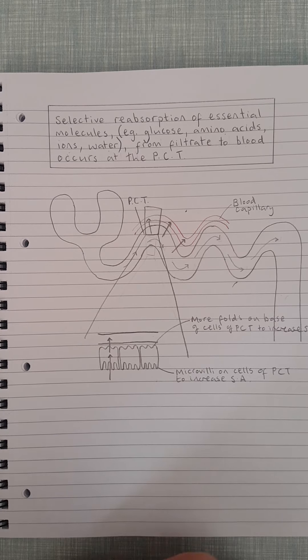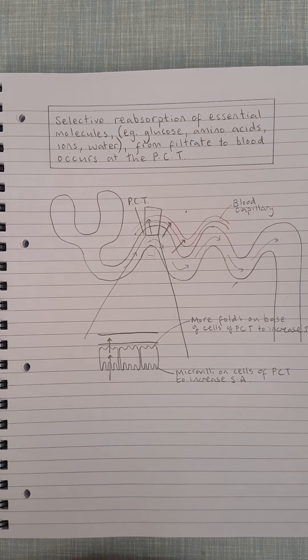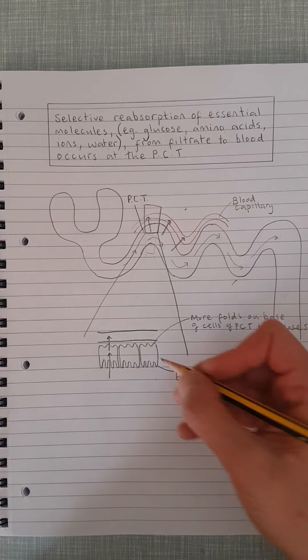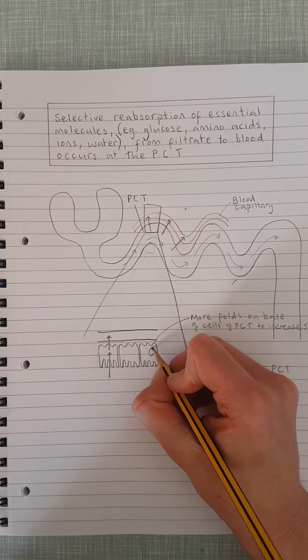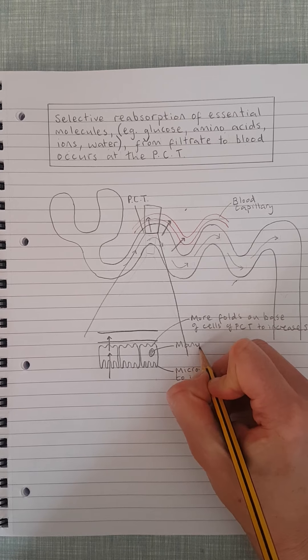So we've got, you know, whenever you have to write about absorption in biology, quite often there are going to be adaptations to increase surface area to maximize diffusion or active transport.